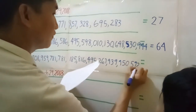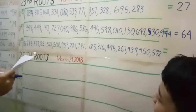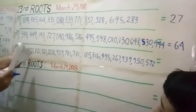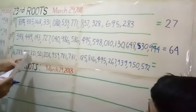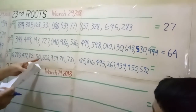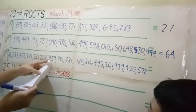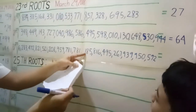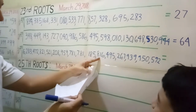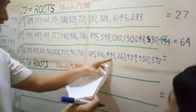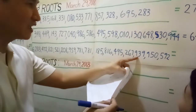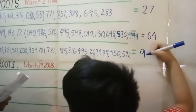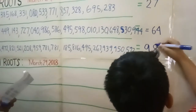Let me read the number first. The cube root of 6 quattuordecillion, 283 decillion, 472 decillion, 821 decillion, 521 decillion, 208 nonillion, 959 octillion, 781 septillion, 781 sextillion, 185 quintillion, 816 quadrillion, 495 trillion, 267 billion, 939 million, 950,592. Oh my gosh. Well done, Joshua.